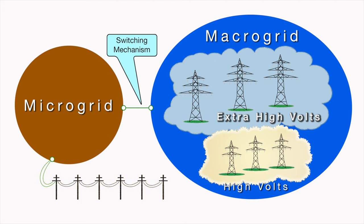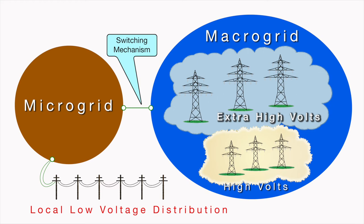When serving a relatively small geographic area, grid-connected microgrids demonstrate economic viability for educational campuses, medical complexes, public safety, military bases, agricultural farms, commercial buildings, and industrial facilities.